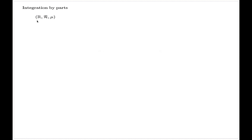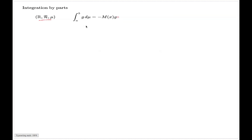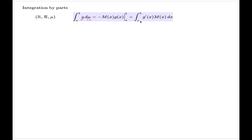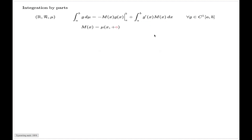If I have a measure space on the real line — not necessarily the canonical length measure space, but still some measure space on the real line — then the integration by parts normally refers to an identity like this. It is a very powerful identity because on the left-hand side you have the Lebesgue integral of some function over the segment AB with respect to your given measure. On the right-hand side, this is effectively a Riemann integral, and it holds for every C1 function on the segment AB, where capital M is a function defined like this.